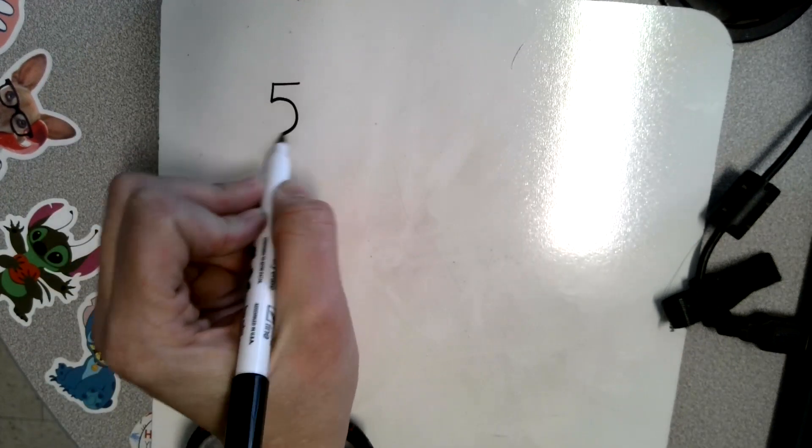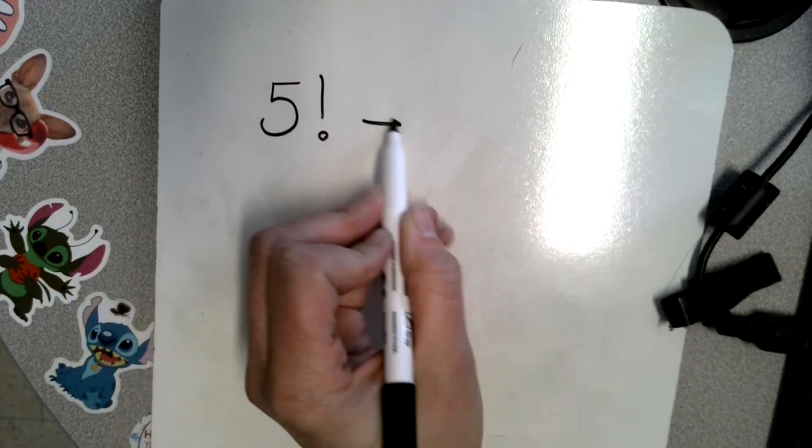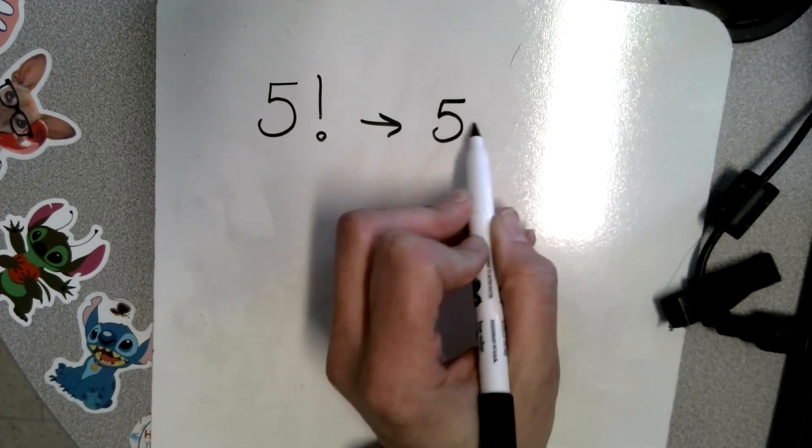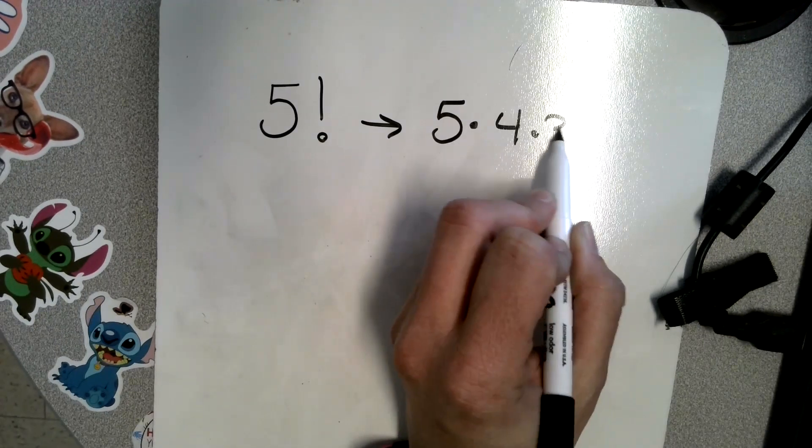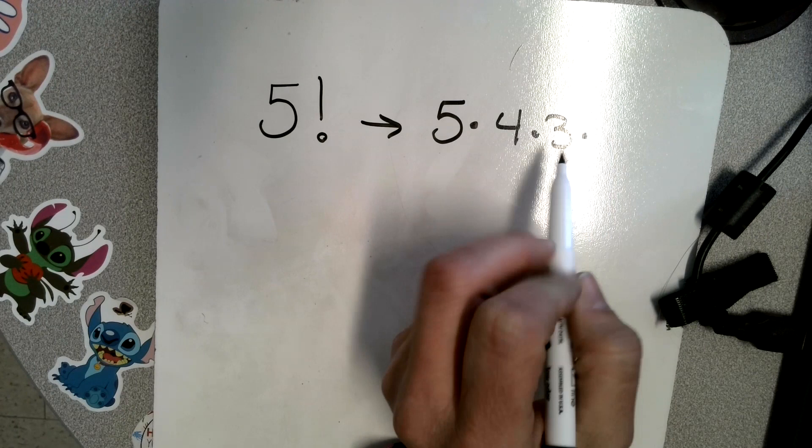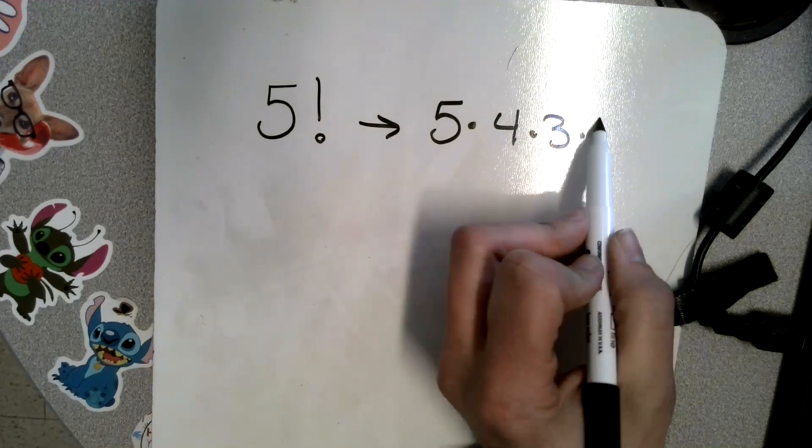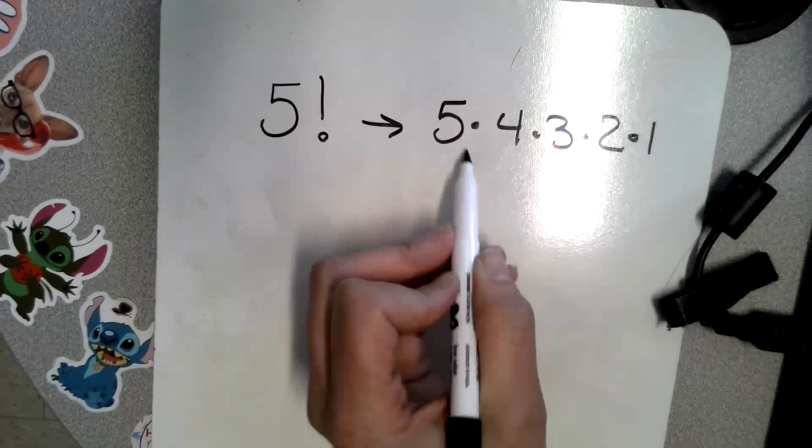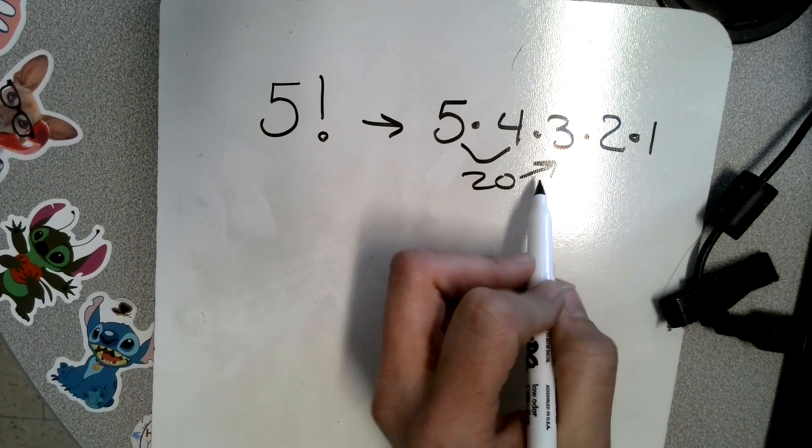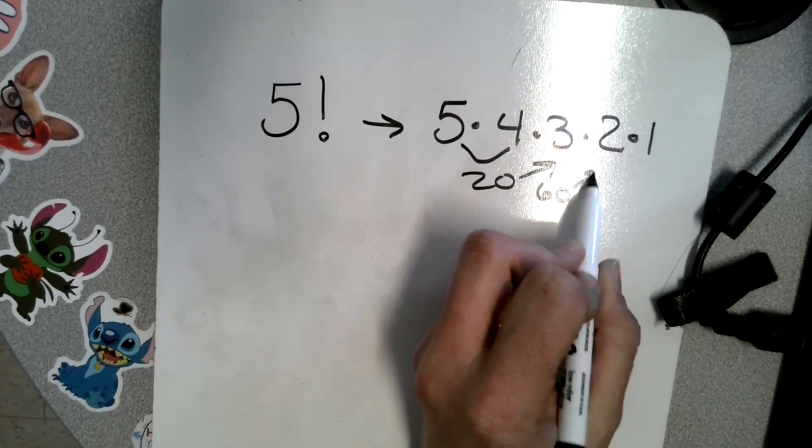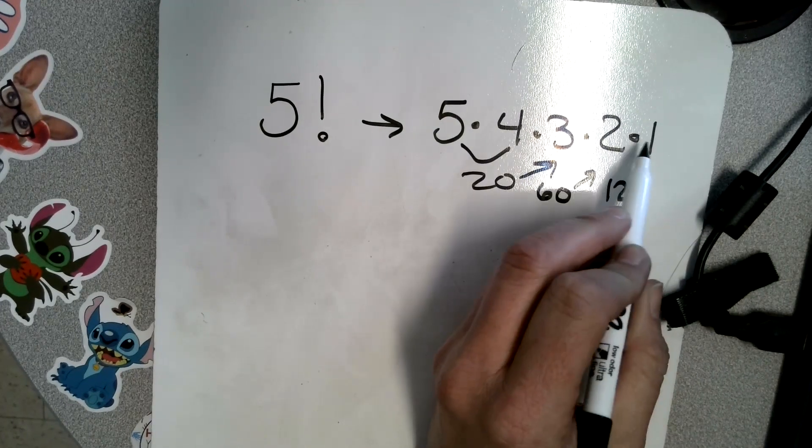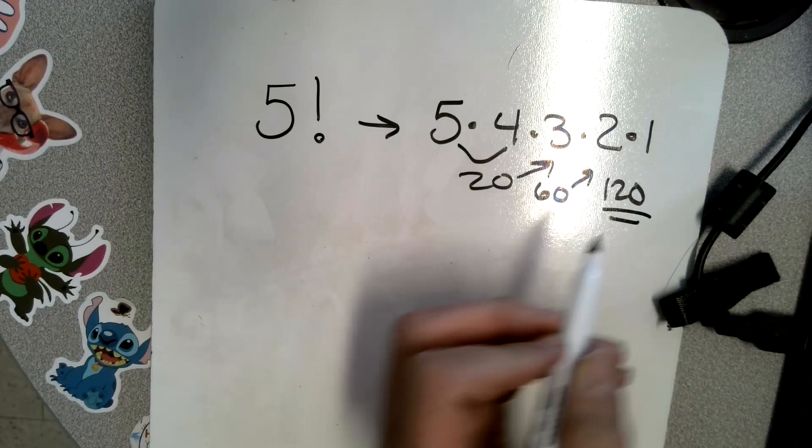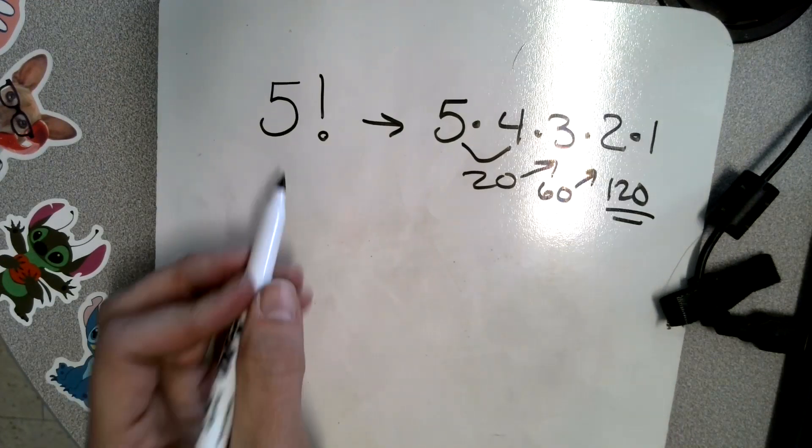So if we have, remember, five factorial, that means that we write 5 and we go all the way to the end. So that means like five things taken five at a time. So then we would do the math. So we have 20, 20 times 3 is 60, 60 times 2 is 120, and 120 times 1 is 120. This is what we did a couple weeks ago.